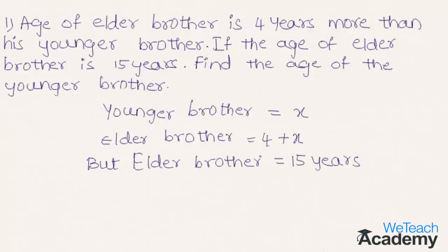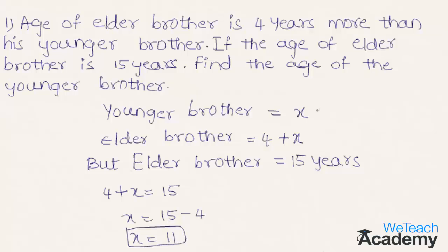Now let us equate both the ages of the elder brother. By equating we get 4 plus x equal to 15. By transferring 4 to the right hand side we get x equal to 15 minus 4, which is 11. So we get the age of the younger brother as 11 years.